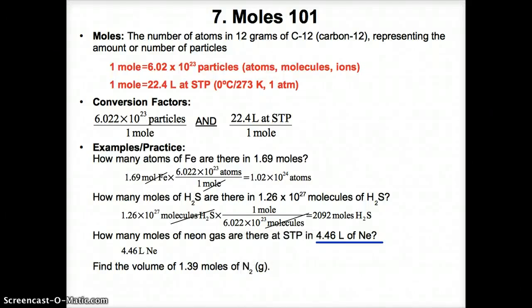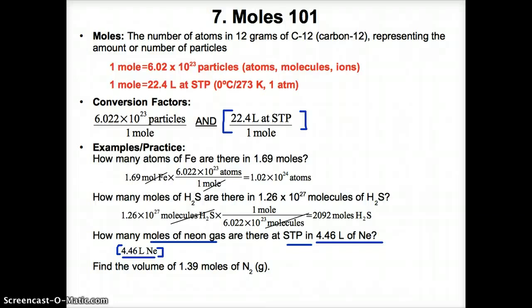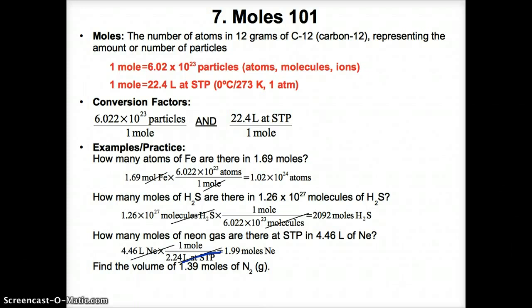Convert 4.46 liters of neon gas at STP to moles of neon gas. Start with 4.46 liters as the numerator. Use the conversion factor relating liters and moles, but flip it so liters are in the denominator and moles are in the numerator. The liters cancel out, leaving moles. Divide 4.46 by 22.4, giving 0.199 moles of Ne.